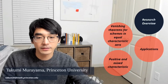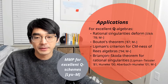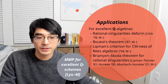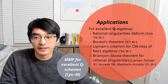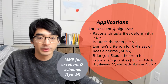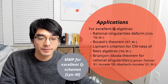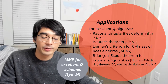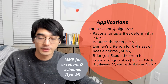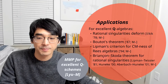How are vanishing theorems used in applications? It's very useful to have vanishing theorems when you work with rings and schemes of finite type over a field, and I was able to generalize some results for those types of rings and schemes to the realm of excellent Q-schemes and excellent Q-algebras.